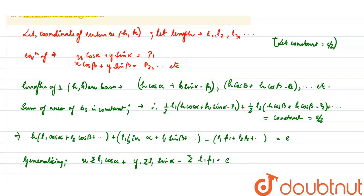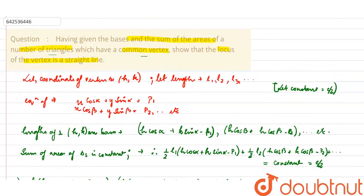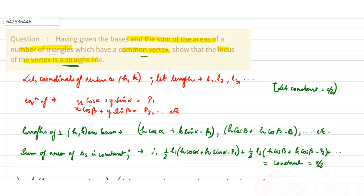This is constant. We can say that this entire expression is an equation of a straight line. The question asked us to prove that the locus of the vertex is a straight line. So, we can see that the answer is therefore proved.